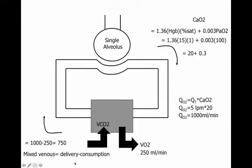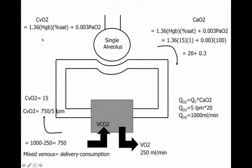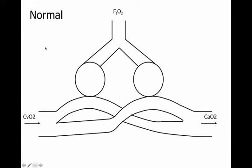Mixed venous oxygen content is whatever is delivered minus what's consumed. With 1,000 mL/min delivered and 250 mL/min extracted, what returns is 750 mL/min. Working backwards, the mixed venous content is 15, and mixed venous O2 saturation is about 75%. So normal mixed venous saturation is 75%. We'll come back to this in a minute.